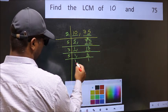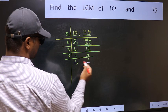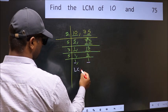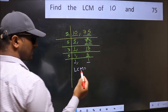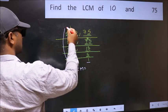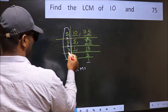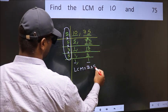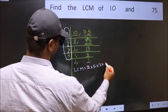So we got 1 in both places. So our LCM is the product of these numbers. That is 2 into 5 into 3 into 5.